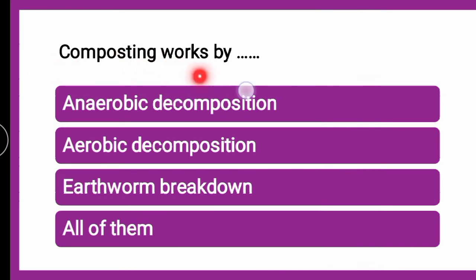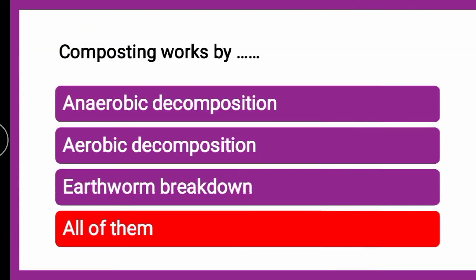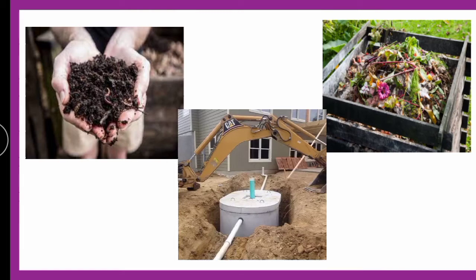Next question: Composting works by — anaerobic decomposition, aerobic decomposition, earthworm breakdown, or all of them? The correct answer is all of them. The three types of composting are aerobic composting, which occurs in the presence of air; anaerobic composting, which takes place in a special sealed tank; and vermicomposting, which is breakdown by earthworms.